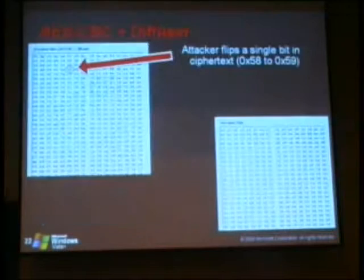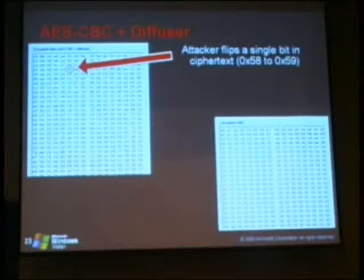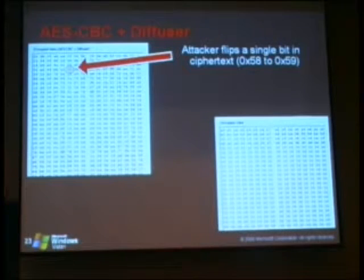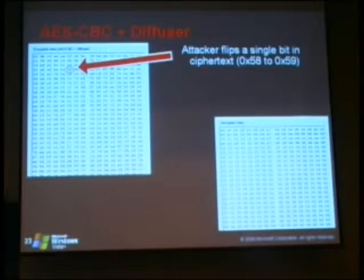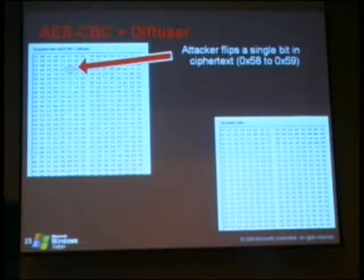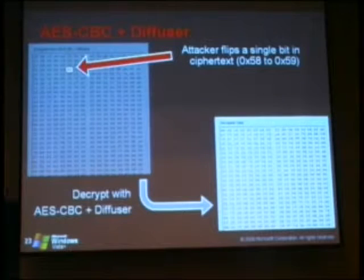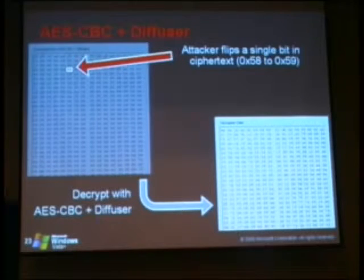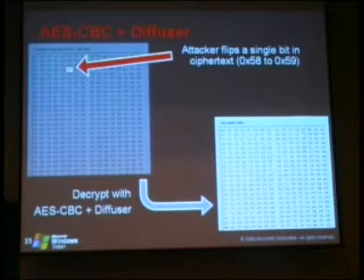Let's see what happens with AES-CBC plus the diffuser. The attacker modifies this one little bit — we changed it from 58 to 59. Now we decrypt, and notice how that one change propagates across the entire sector.